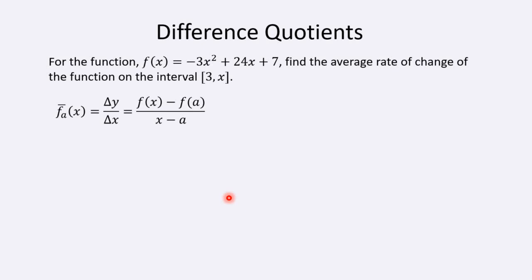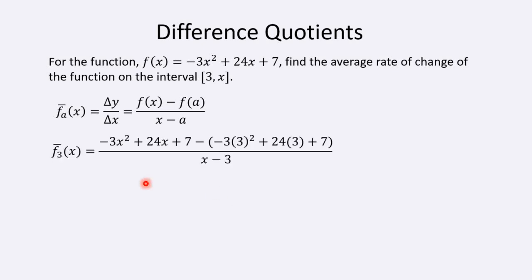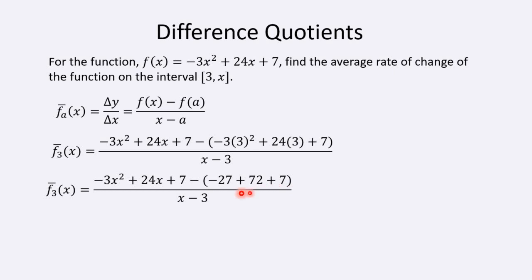In this case, the value of a is equal to 3. So f-bar sub 3 of x — the average rate of change between 3 and x — equals f(x), which is the full expression -3x² + 24x + 7, minus f(3), because 3 is the value of a, all divided by x minus 3. We simplify the inside by distributing the negative and combining like terms, and the constant terms amount to negative 45.